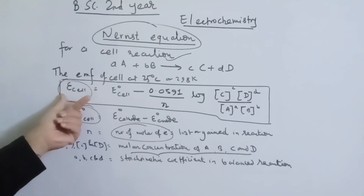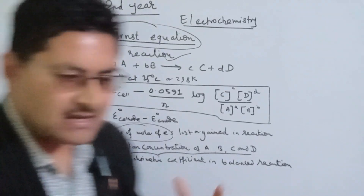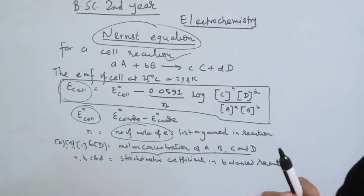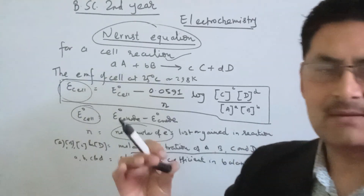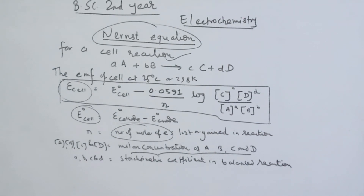The Nernst equation is important. The Nernst equation is: E cell equals E° cell minus 0.0591 divided by n, times log of [C to the power c times D to the power d] divided by [A to the power a times B to the power b]. This is the Nernst equation.